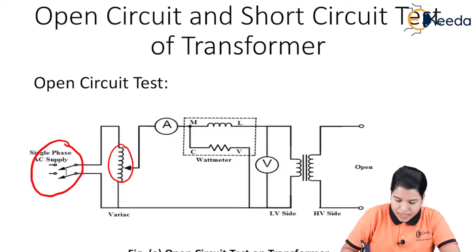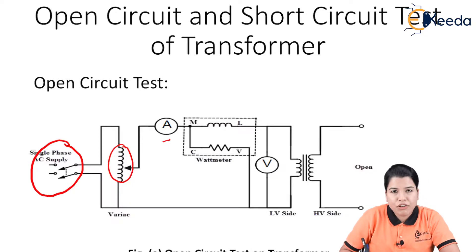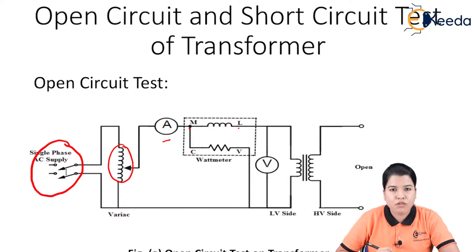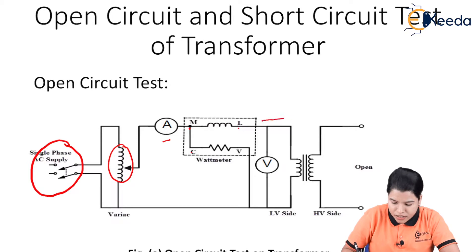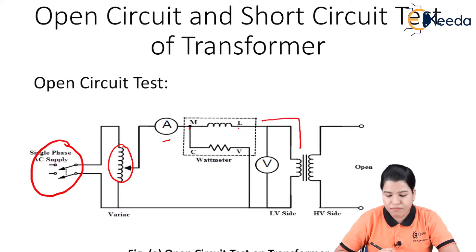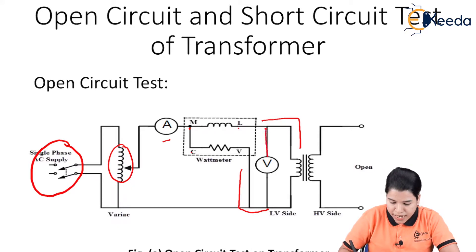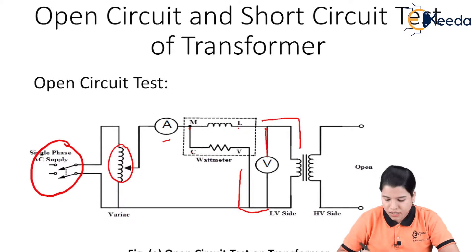The ammeter A is connected in series with the wattmeter. The wattmeter has four terminals: M, L, C, and V, where M represents main, L represents line, C represents common, and V represents voltage. The L terminal of the wattmeter is connected to the primary winding, and the V terminal is connected to the terminal of the voltmeter. One end of the L terminal is connected to the positive terminal of the voltmeter, and the negative terminal is connected to the V terminal.